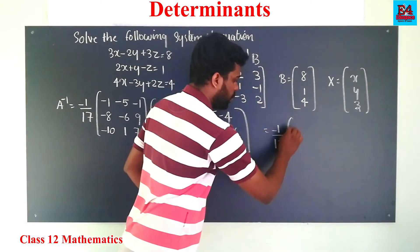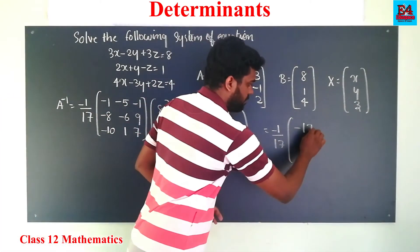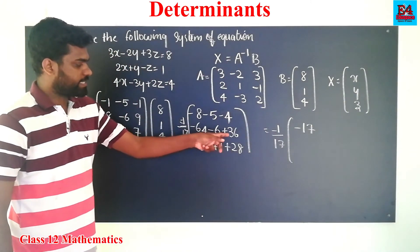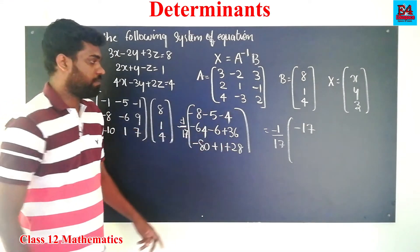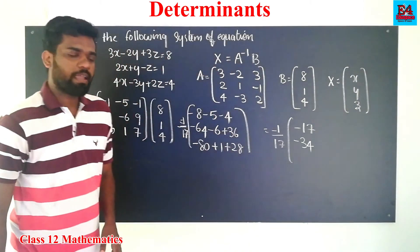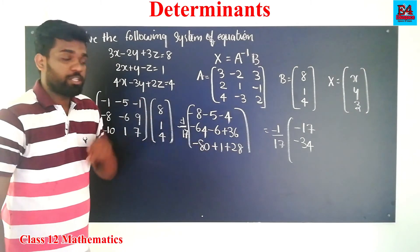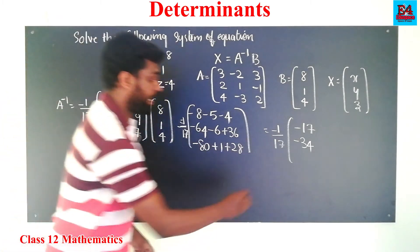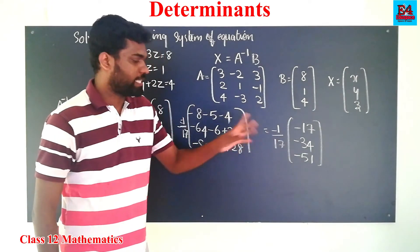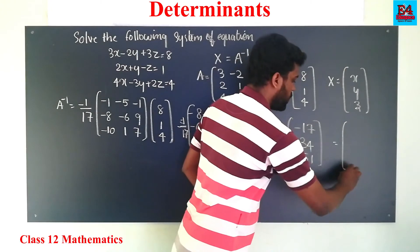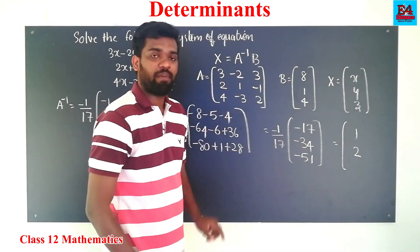Now multiplying by minus 1 by 17: first row sum is minus 8 minus 5 minus 4 equals minus 17. Second row: minus 64 minus 6 plus 36 equals minus 34. Third row: minus 80 plus 1 plus 28 equals minus 51. So we get minus 1 by 17 times the column minus 17, minus 34, minus 51. Simplifying: minus 17 divided by minus 17 is 1, minus 34 divided by minus 17 is 2, minus 51 divided by minus 17 is 3.